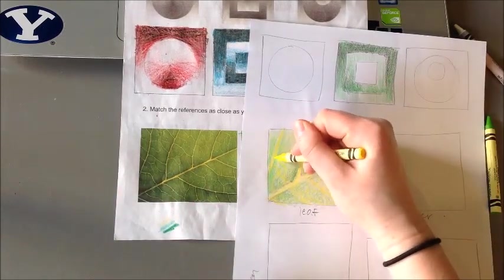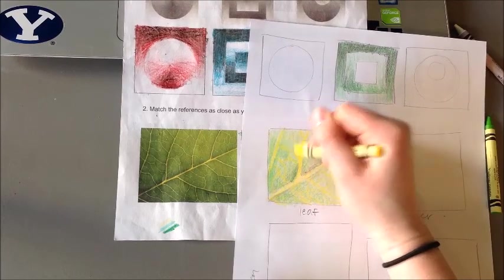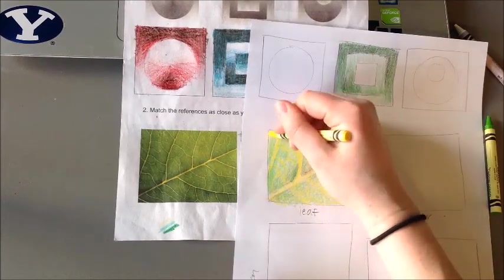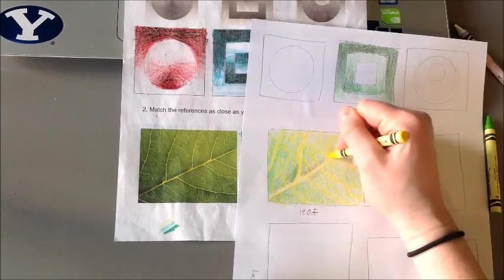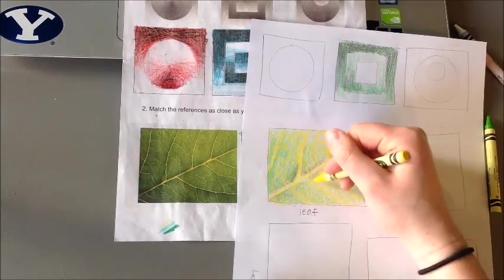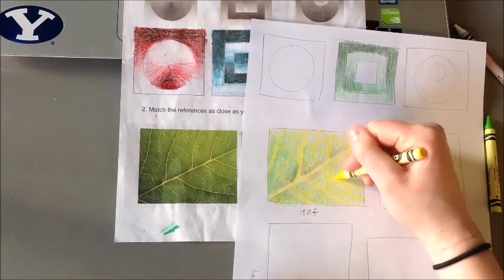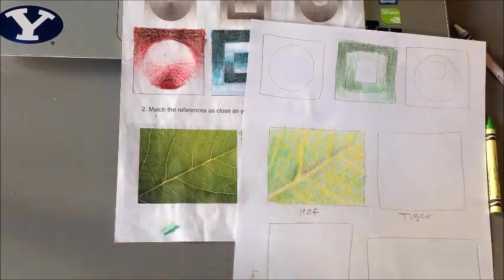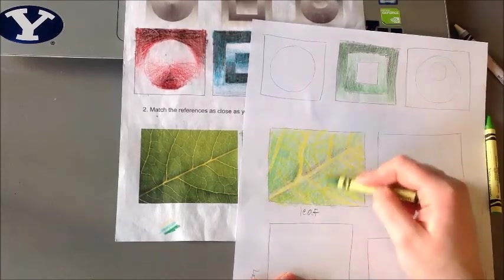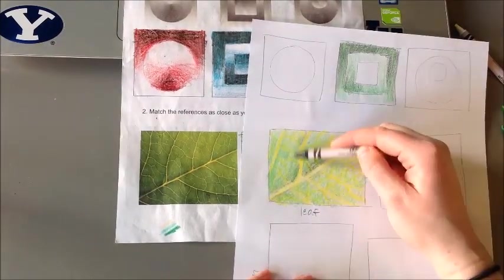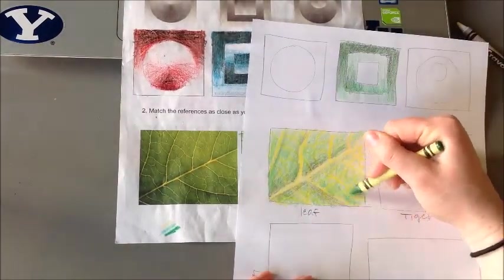Now before I get too much further in the layering, I'm going to go through and go over my vein areas one more time, my lighter vein areas, because I feel like they are kind of about to get lost. So I'm going to make sure to darken them. It kind of creates that resisting area. I still got my basic shapes. Now I really need to go in with that value a little bit more.